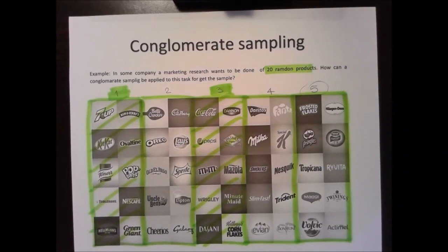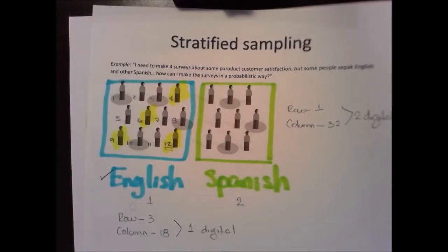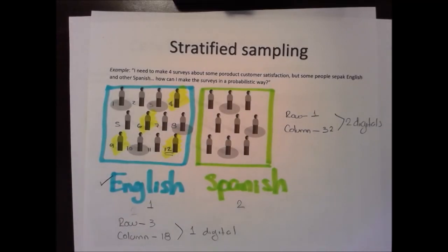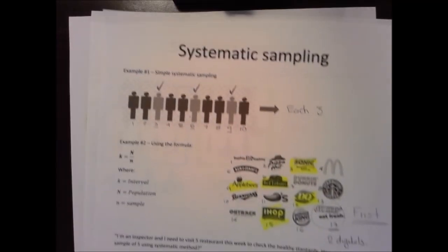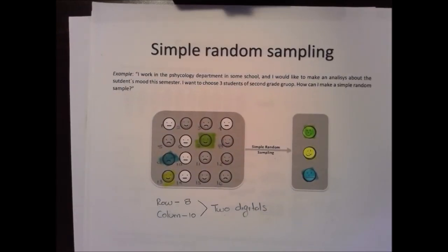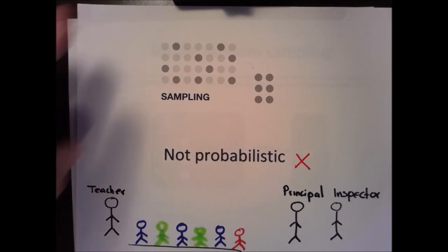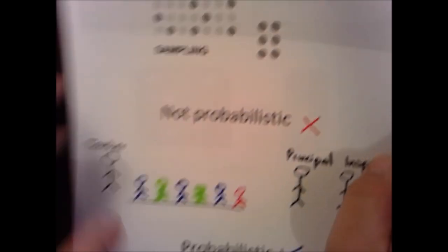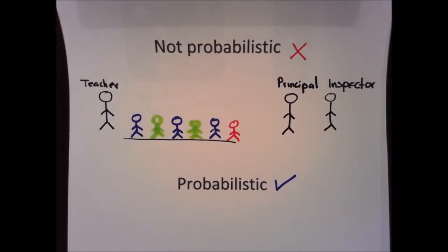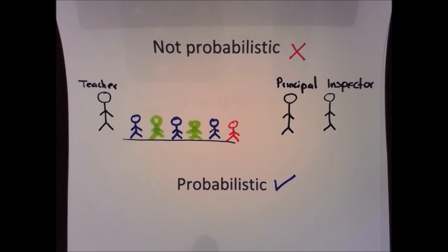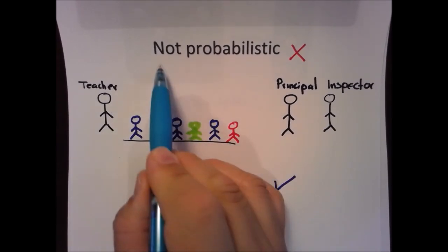To conclude this video, we have seen the conglomerate sampling method, stratified sampling method, systematic sampling method, and simple random sampling method. And remember, the most important thing when making a sampling is: never, never, never use a non-probabilistic method.